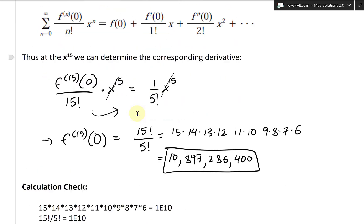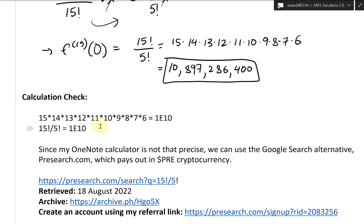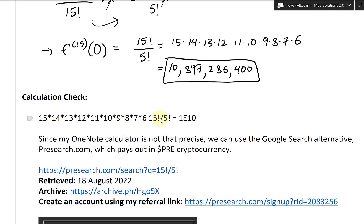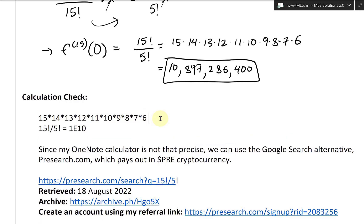Now let's just do a calculation check on this. So my OneNote has a built in calculator. So we could just type it around here, 15 times 14, et cetera, all the way to the 6. And if you do this here, oops, let's go back here, equals. Yes, it just rounds up to one power of, one e times 10.